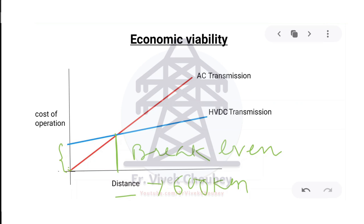That's why for intercontinental transmission lines — such as a line going from Russia to Germany spanning thousands of kilometers — HVDC transmission is more viable. For local transmission under 600 kilometers, AC transmission is used because it is economically viable. These are the conditions under which we choose between AC and HVDC.